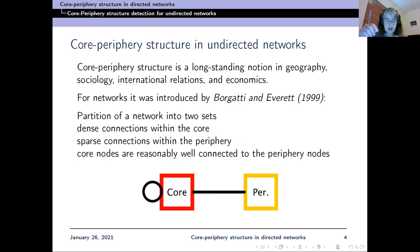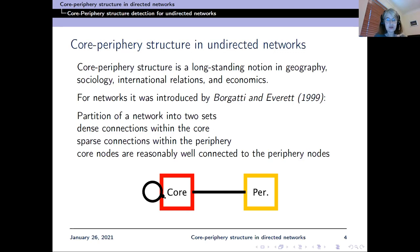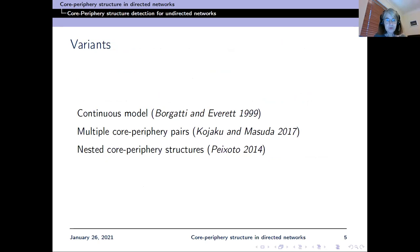In undirected networks, core-periphery structure goes back to a notion which long predates network analysis. In geography, sociology, international relations, and economics, people often thought of core nations, core states, core people, and peripheral people or periphery states which somehow interact with the core. For networks, it was introduced by Borgatti and Everett in 1999 with the birth of statistical network analysis. They partitioned the network into two sets: a core set and a periphery set, with dense connections within the core, sparse connections within the periphery, but core nodes reasonably well connected to the periphery.